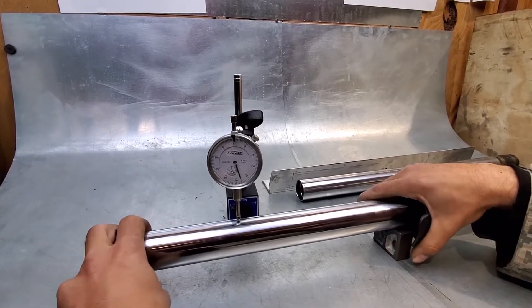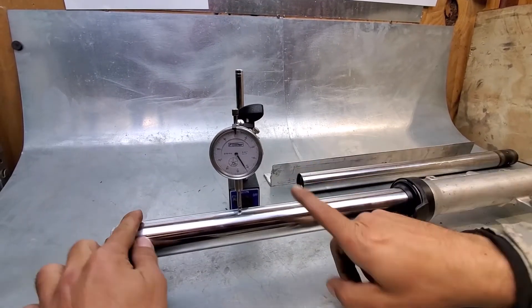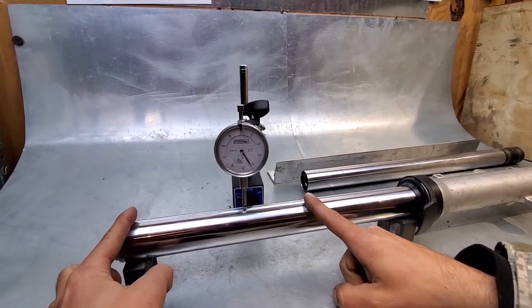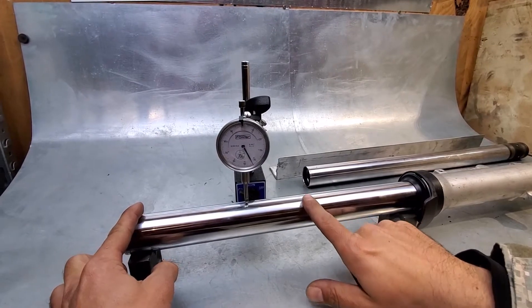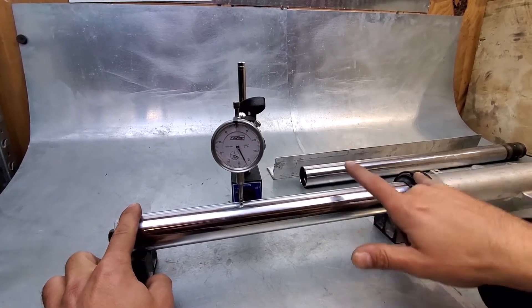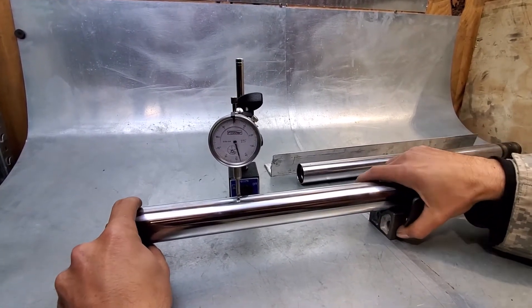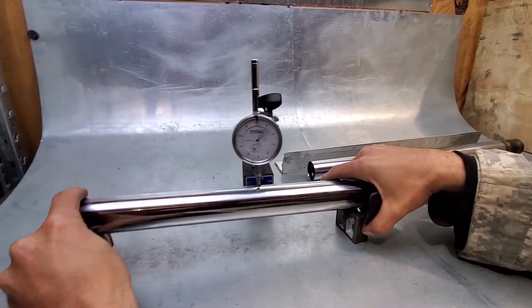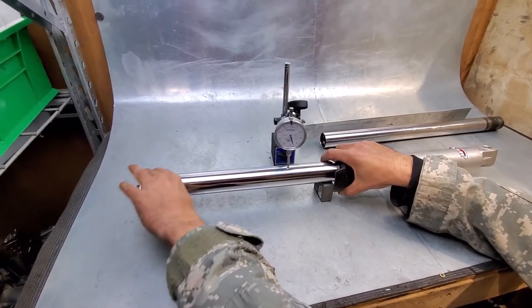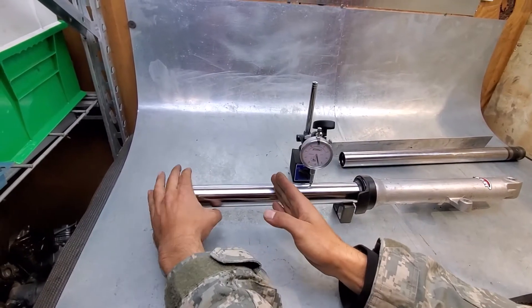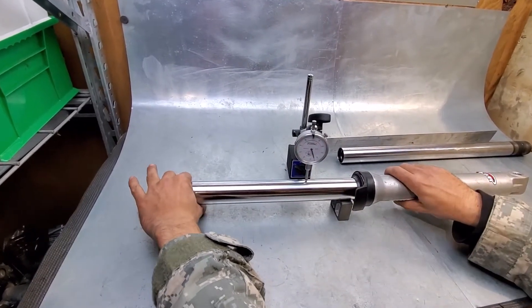Now the thing I just did wrong is I just measured deflection in the place where the triple holds it. That's not where forks bend. Forks bend between where the triple holds it and the lower body. So let me move to the place where I should be which is roughly between the triples and the lower fork leg.